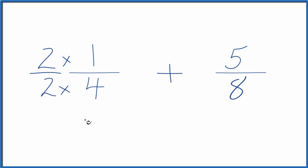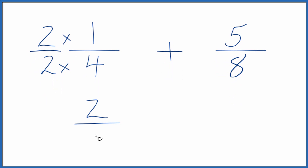2 times 1 is 2. 2 times 4 is 8. And if you divide 2 by 8 or 1 by 4, you'll get the same decimal answer, 0.25. These are equivalent fractions.